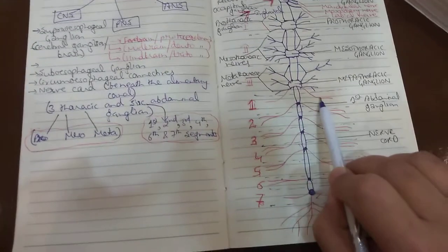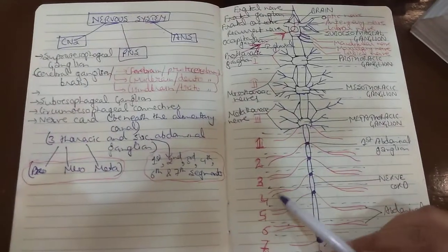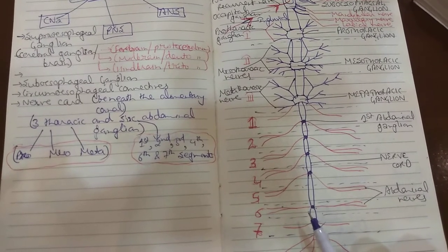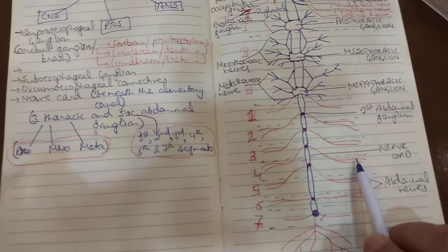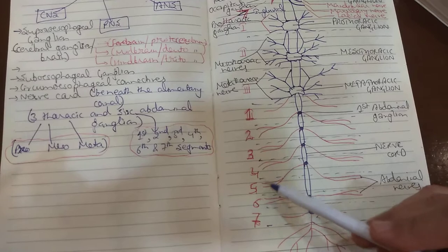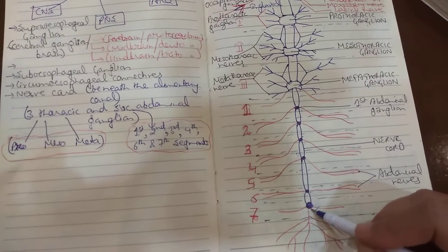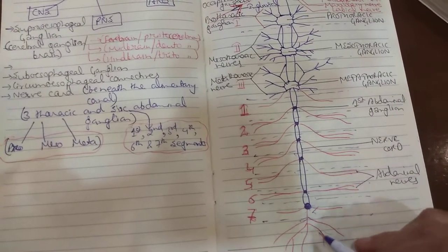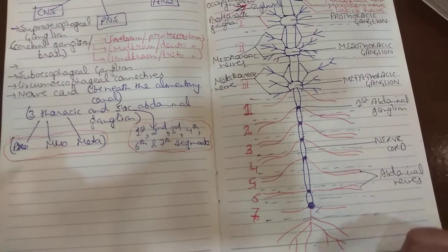Each of the first five abdominal ganglia gives off a pair of nerves, each dividing into two branches. These nerves run backward, supplying the second, third, fourth, fifth and sixth abdominal segments. The sixth abdominal ganglion, which is present in the seventh segment, gives off three pairs of nerves to the seventh, eighth and ninth segments. It also sends thick nerves to the cerci.